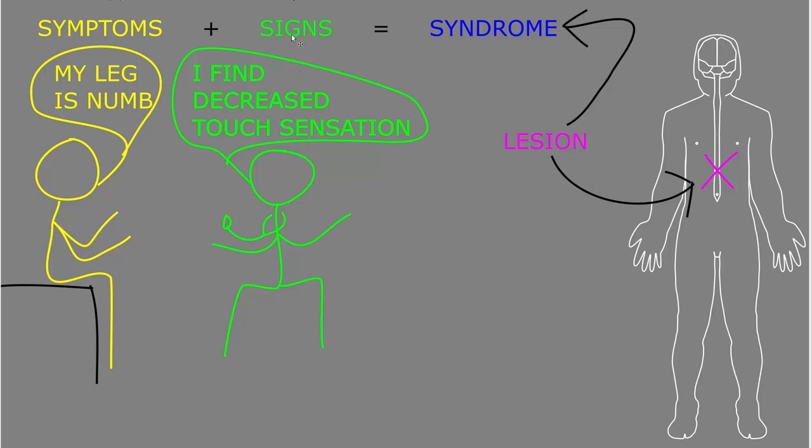When you put together all the symptoms and signs that a patient has, we call that their syndrome. Neurological syndromes are caused by lesions in the nervous system. We use this term lesion to refer to the location of an area of dysfunctional tissue that's causing a neurological syndrome.